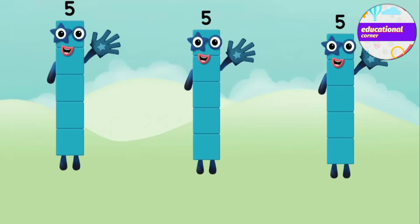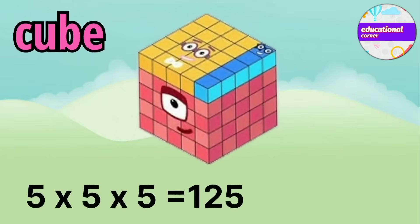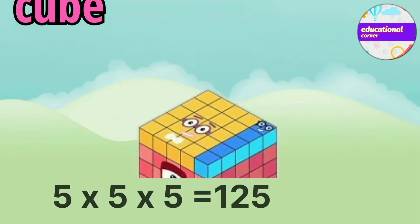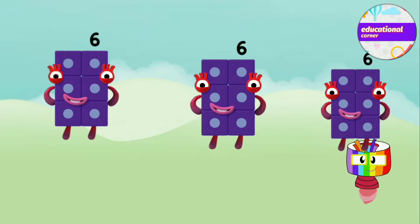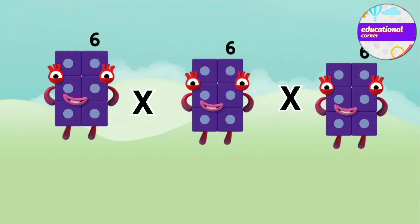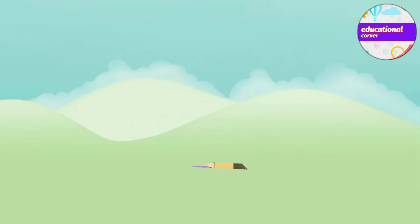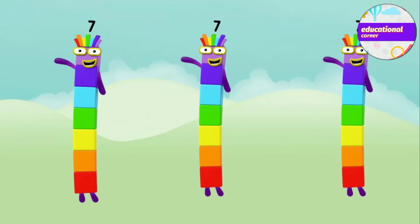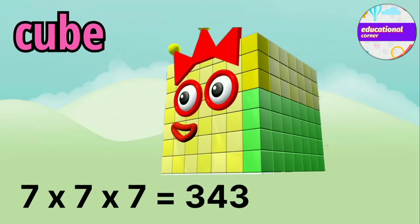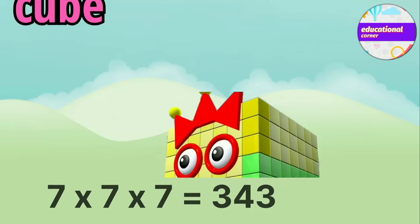5 x 5 x 5 equals 125. 6 x 6 x 6 equals 216. 7 x 7 x 7 equals 343.